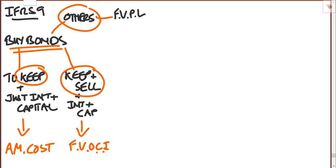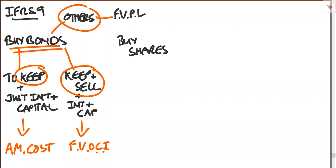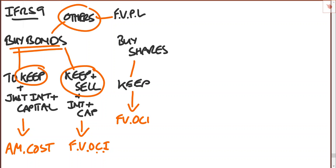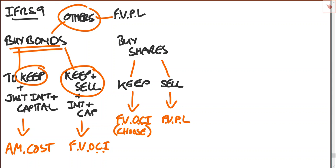What if we don't buy bonds but we buy shares in another entity? Again, you've got to determine what you're going to do with them. If you intend to keep the shares, they can be classified at fair value through other comprehensive income — but you need to choose to do that. It's called an irrevocable election: you can elect to keep them at fair value through OCI. If not — if you intend to sell them, and the standard talks about holding them for trading purposes — then you're going to go fair value through profit and loss.